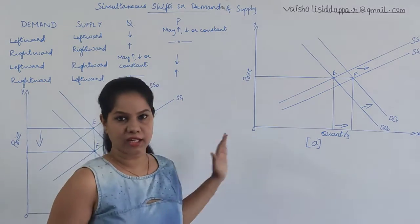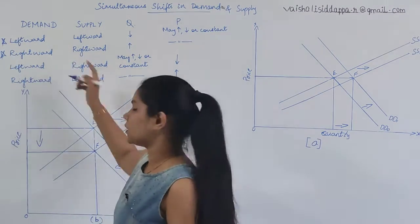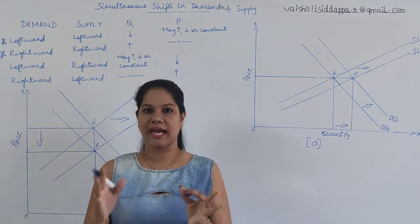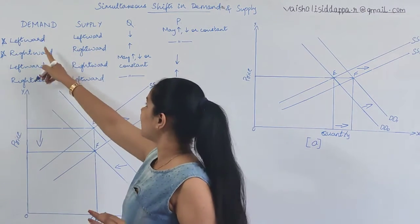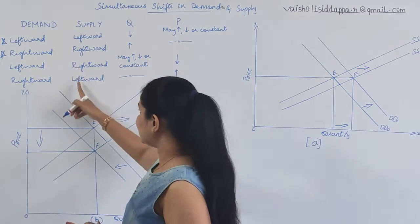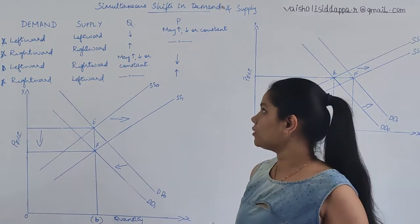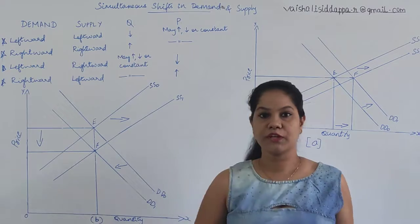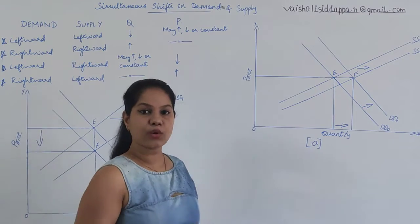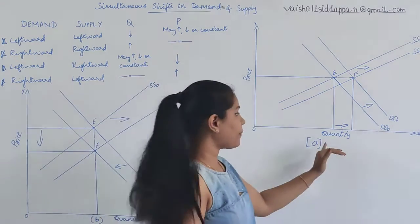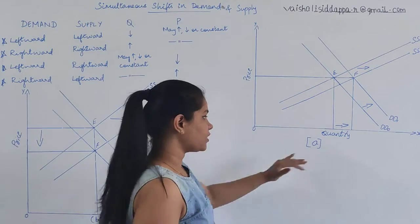There are two panels. Panel A has two diagrams covering situations where both demand and supply move together in the same direction — both moving towards left, and both moving towards right. Panel B covers the opposite situations. In Panel A, you have quantity on the x-axis and price on the y-axis with a zero base.